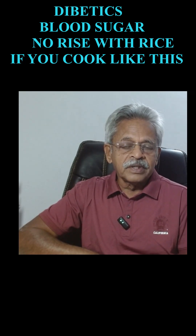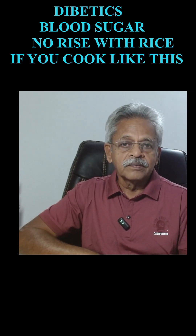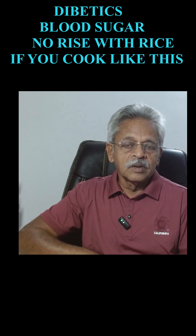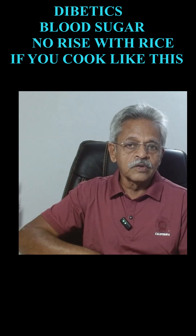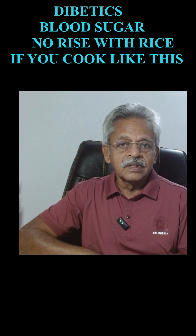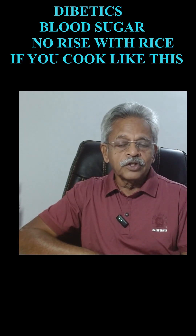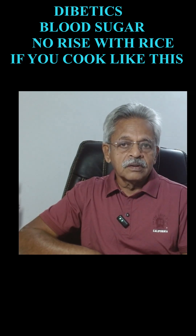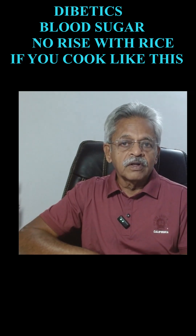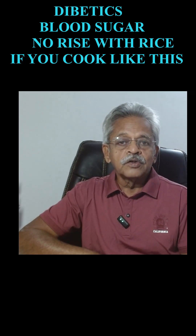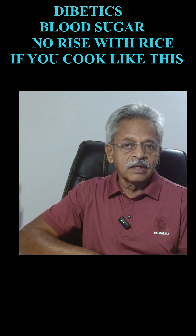So you always compare other foods with glucose. Foods which behave exactly like this — how fast it rises and how much it rises — also have a glycemic index of 100. So it is not an absolute number; it's a comparative number. If another food behaves 50% as that of glucose — for example, if glucose reaches 140 milligrams in half an hour and this food reaches only 70 milligrams in half an hour — then you give it a GI of 50.